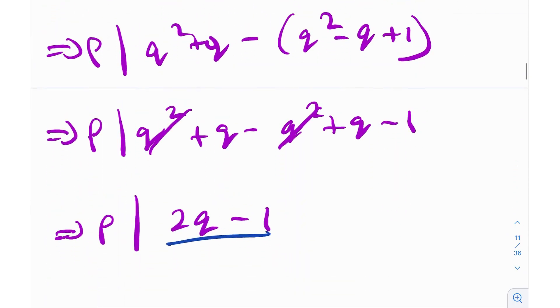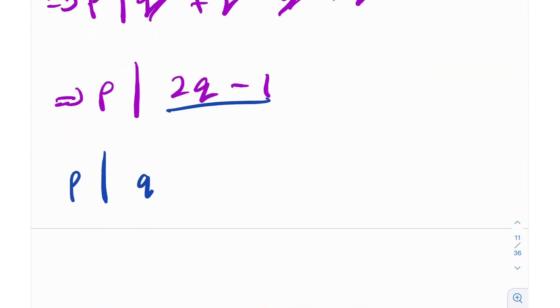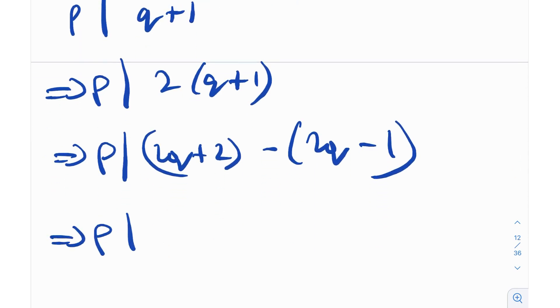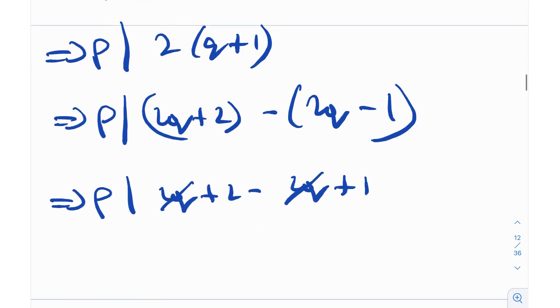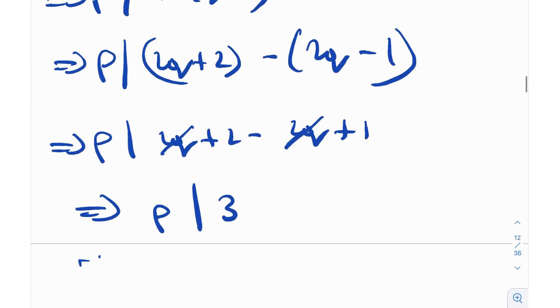We will reduce this further because we know that p divides q + 1, so p also divides twice of q + 1, meaning p divides 2q + 2. But since it also divides 2q - 1, it should divide the difference as well. So p divides 2q + 2 - (2q - 1) = 3. Since p is a prime and it divides 3, p has to be equal to 3.